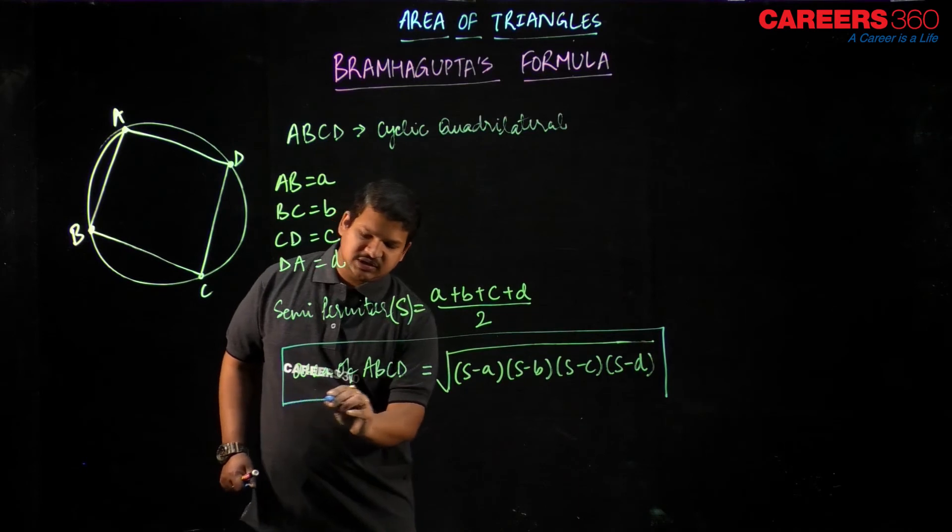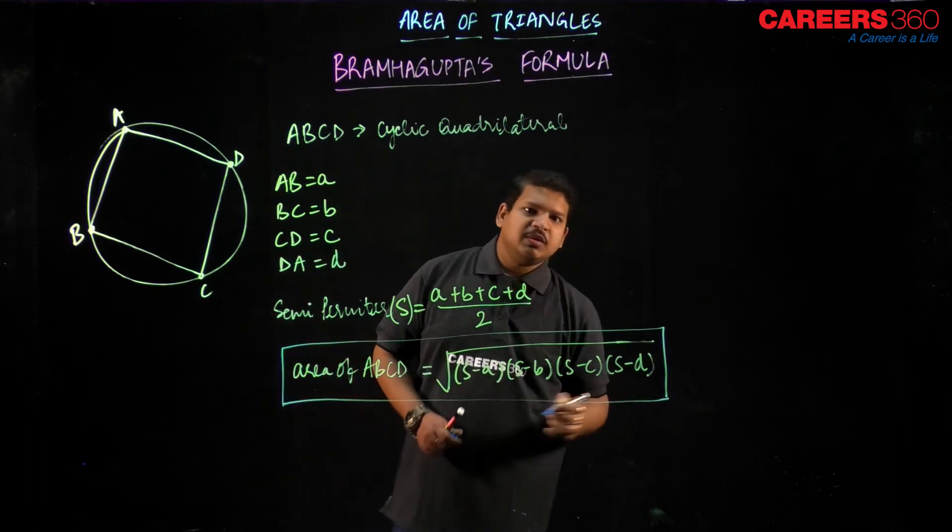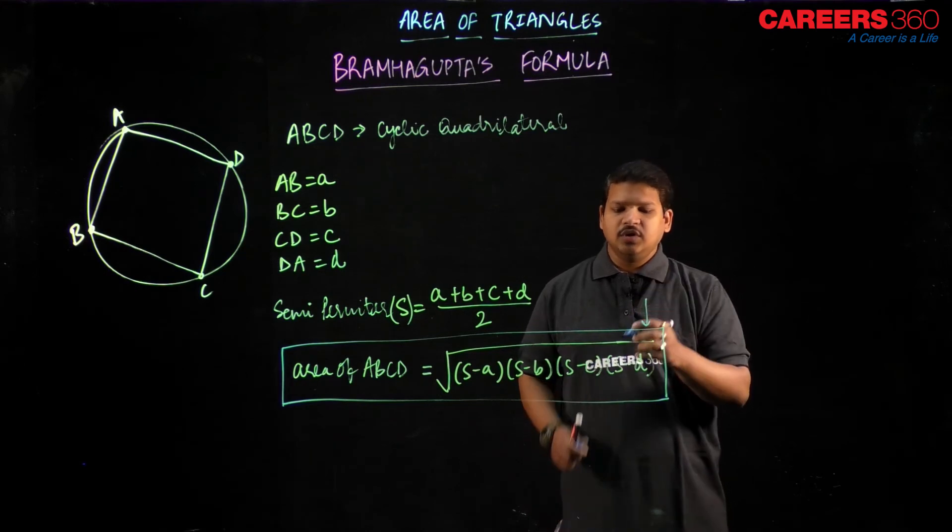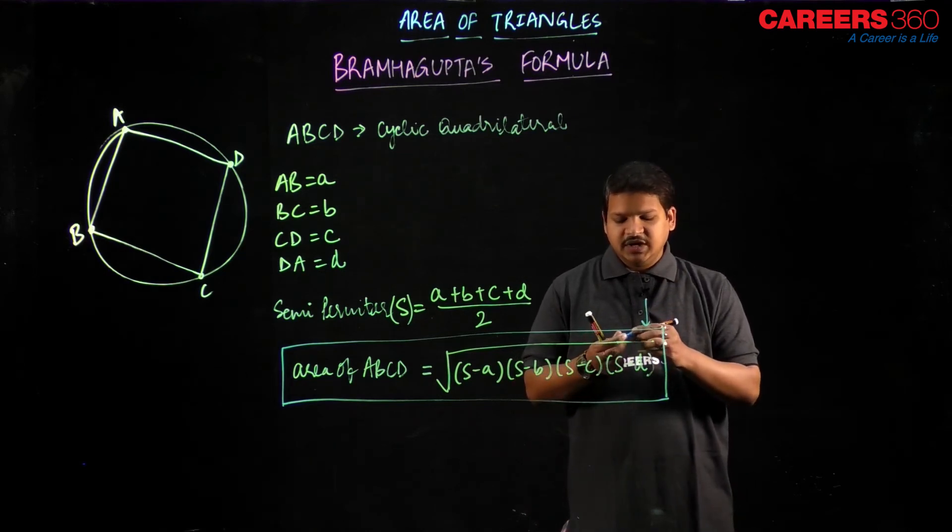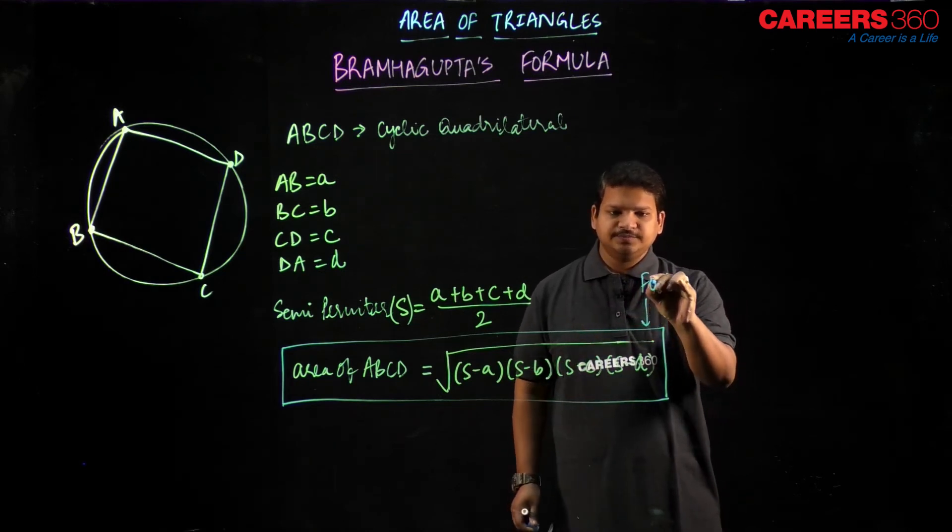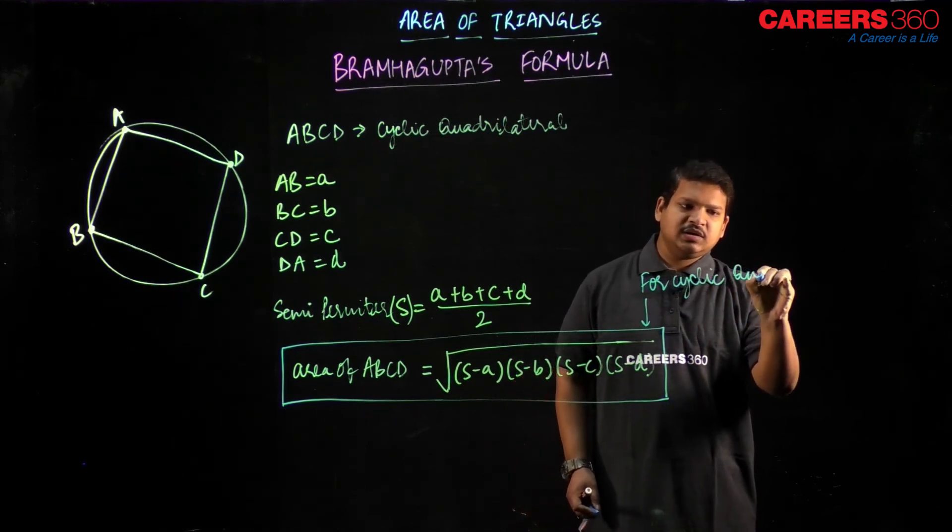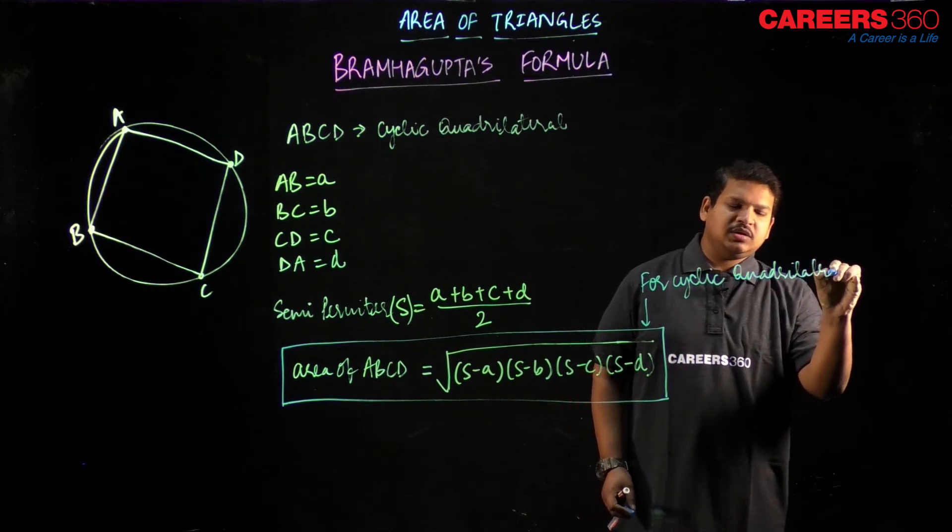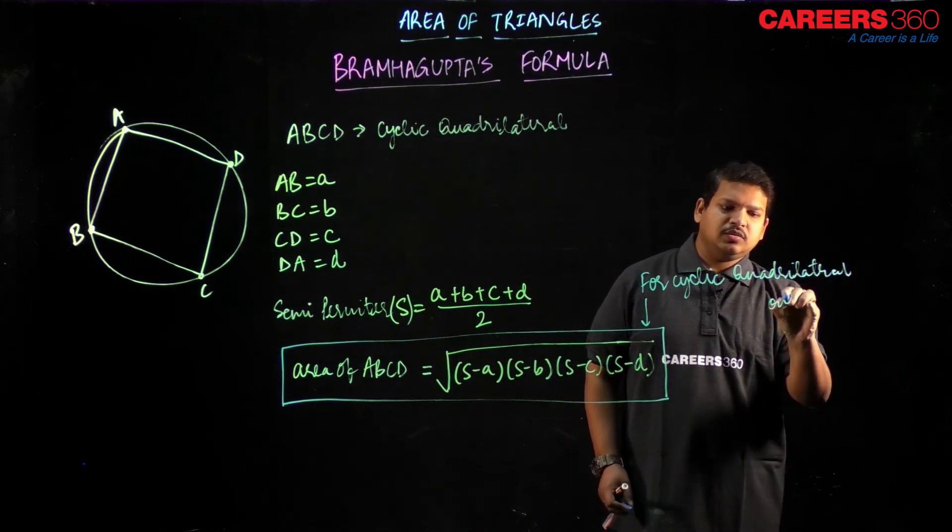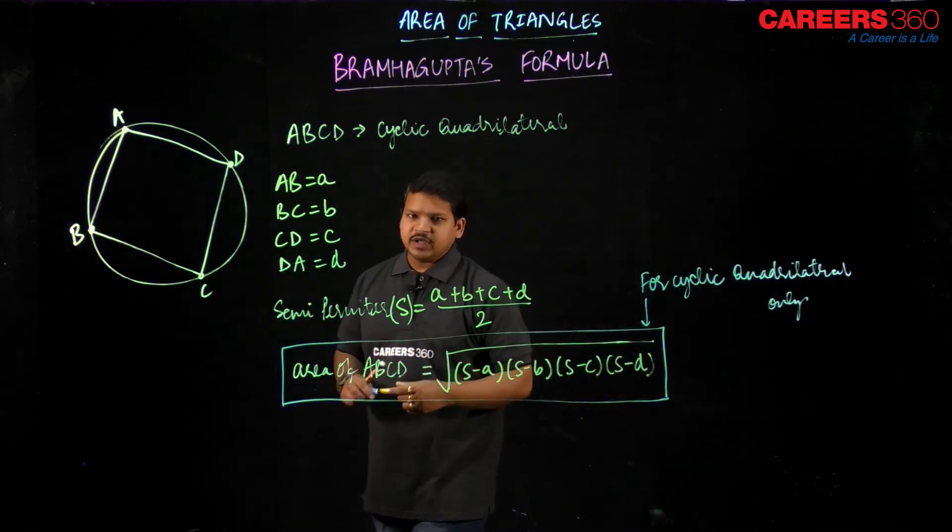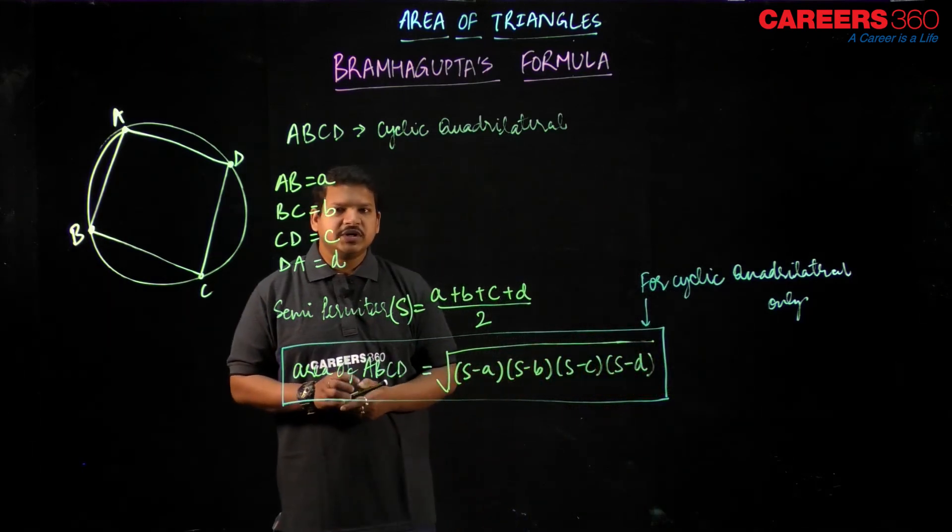This formula is known as Brahmagupta's formula, and this formula is applicable for cyclic quadrilaterals only. That you need to remember, for cyclic quadrilaterals only. This formula is applicable not for all types of quadrilaterals, but cyclic quadrilaterals only.